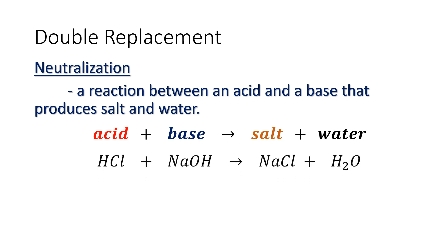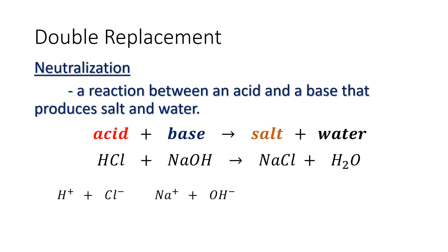For example, hydrochloric acid will react with sodium hydroxide. The procedure is just the same. Hydrochloric acid is formed by the combination of hydrogen and the anion chloride, while sodium hydroxide is formed by the combination of sodium and the polyatomic anion hydroxide. So in this case, hydrogen will combine with the polyatomic anion hydroxide to form water.